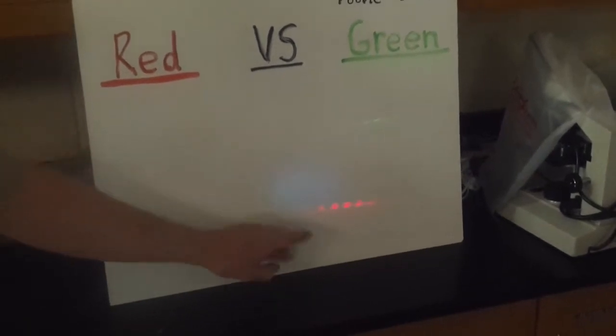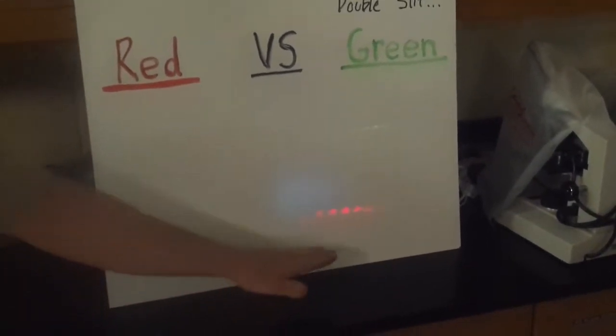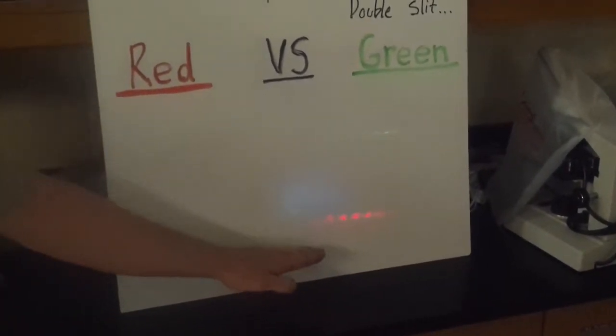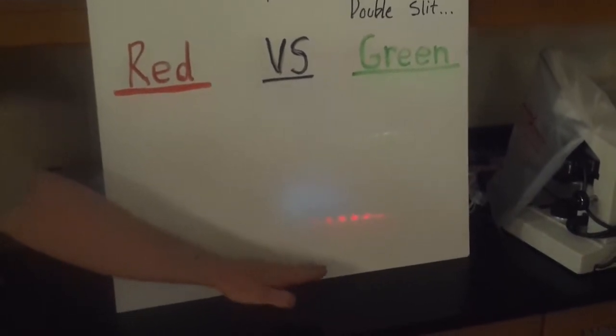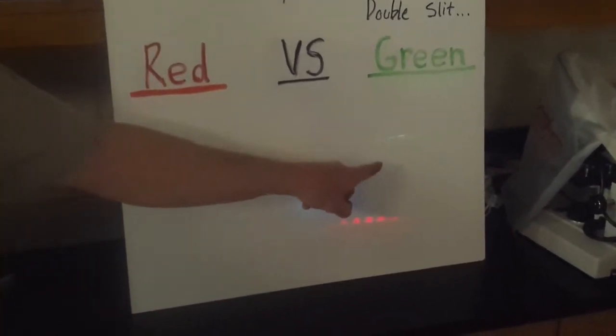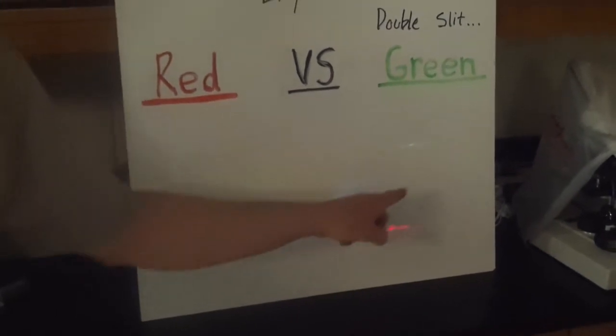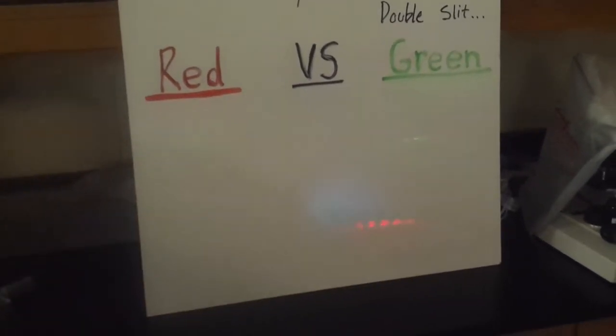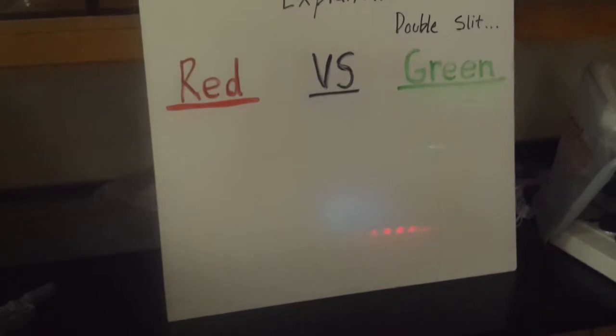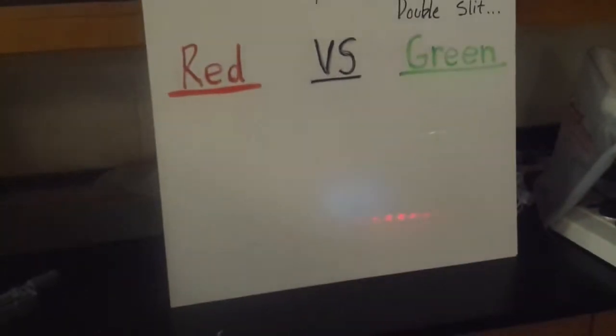What we're going to do is measure how many fringes there are in a certain distance for the red one. And you are going to predict what the length is for the same number of fringes for the green. So how many fringes per unit length there.